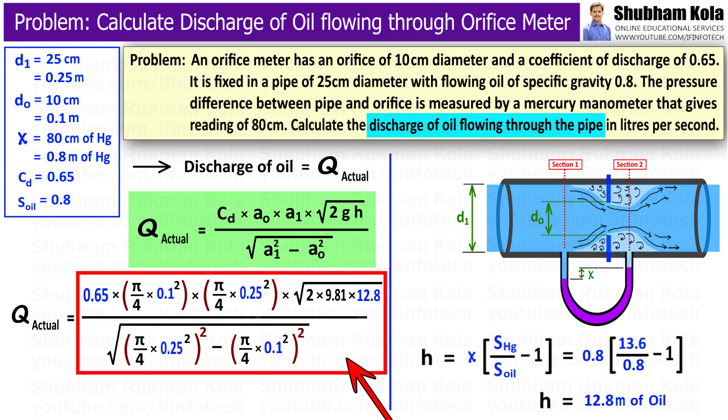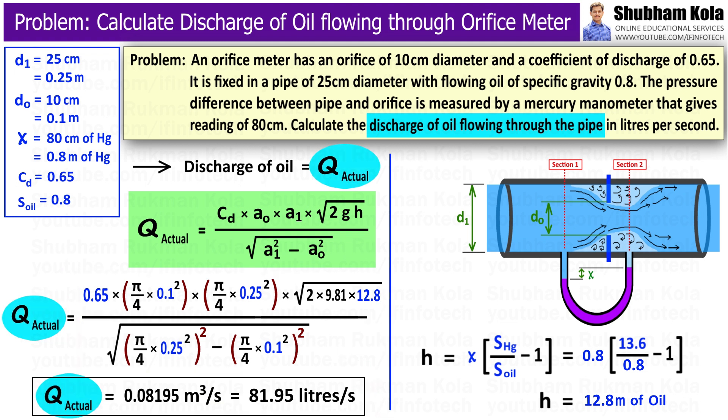Therefore, by calculating this whole term, I will get discharge of oil flowing through the pipe as 0.08195 meter cube per second or 81.95 liters per second.